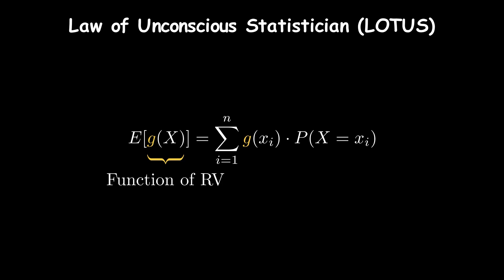Putting it all together, the formula tells us to sum the product of g(x) and PMF over all possible values of x. This way, we can calculate the expected value of the transformed variable g using the original probabilities of random variable X.